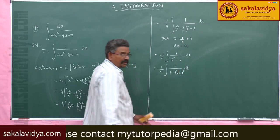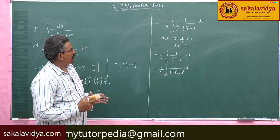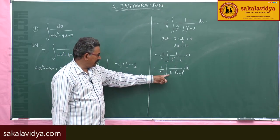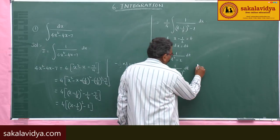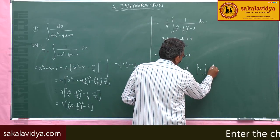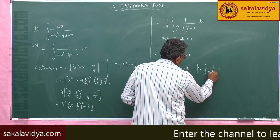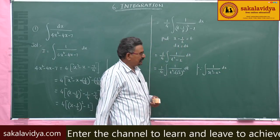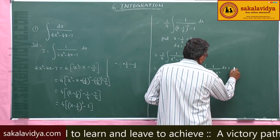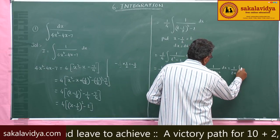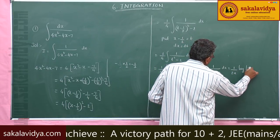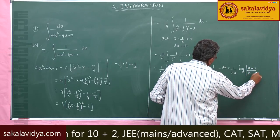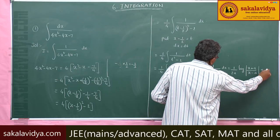As previously discussed, you may get tan inverse, but sometimes you may not. In this case the integral is in the form ∫1/(x²-a²)dx, so the formula is (1/2a)log|( x+a)/(x-a)|+C.